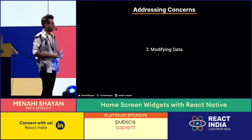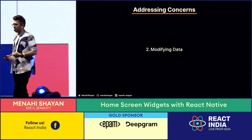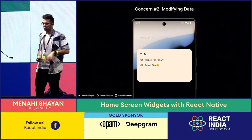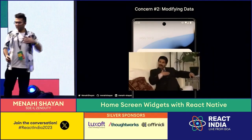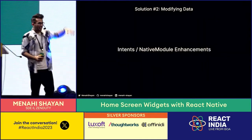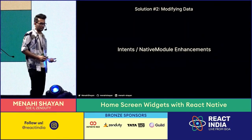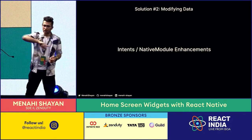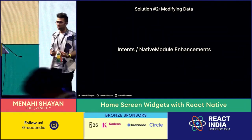Another issue people come to me with is how do you modify data? You wrote data over the bridge, but ideally you should be able to click on a task and it should just mark as done. That is also possible. There is a solution: intents. Both iOS and Android have this concept of intents, where you can perform actions on your widget and it can link back as callbacks or functions to your app itself, allowing modification actions as well.